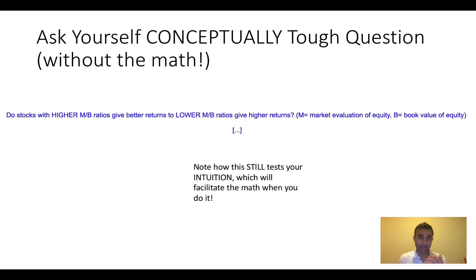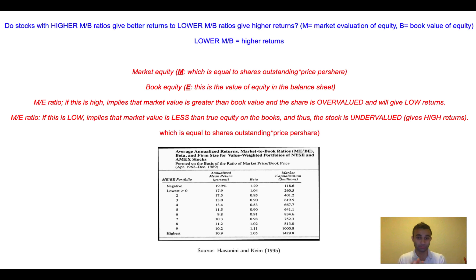the whole point was for me to say, what does this ratio mean? Does this higher ratio give a higher return? No. Maybe it doesn't. Why exactly is that? So now you'll see that I actually then explain this. I say, the higher the ratio, it implies that the market value is greater than the book value, and the share is overvalued, and will give low returns.